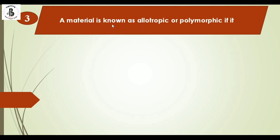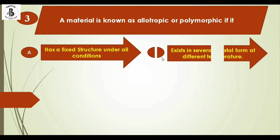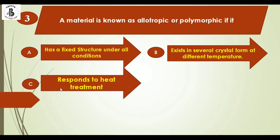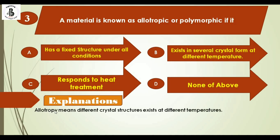A material is known as allotropic or polymorphic if it: option A has a fixed structure under all conditions, option B exists in several crystal forms at different temperatures, option C responds to heat treatment, and option D none of the above. Allotropy means different crystal structures exist at different temperatures. The right answer is option B.